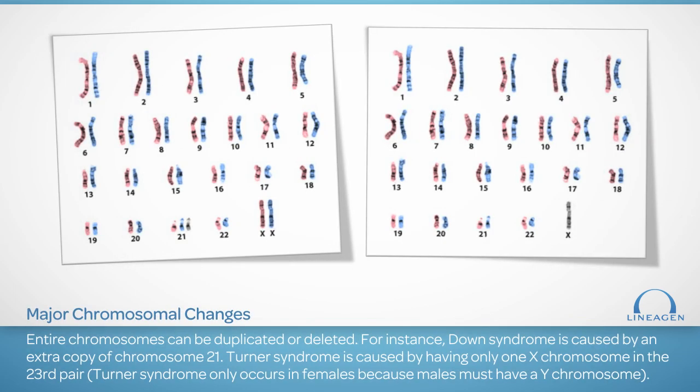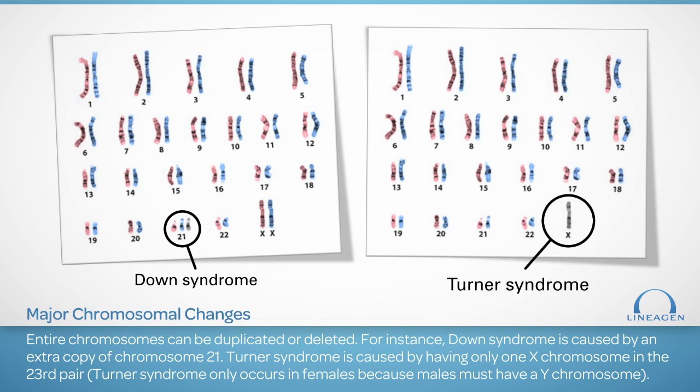Major chromosomal changes occur when entire chromosomes are duplicated or deleted. For example, having an extra copy of chromosome 21 leads to Down syndrome. The medical term for this diagnosis is trisomy 21, to reflect that there are three copies of the chromosome. Lacking a copy of the X chromosome leads to Turner syndrome. This condition only occurs in females because males must have a Y chromosome in their 23rd pair.